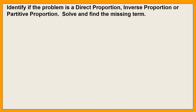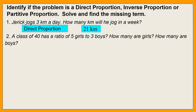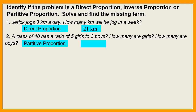Identify if the problem is a direct proportion, inverse proportion, or partitive proportion. Solve and find the missing term. Number 1: Jared jogs 3 kilometers a day. How many kilometers will he jog in a week? This is a direct proportion, and the answer is 21 kilometers. Next: a class of 40 has a ratio of 5 girls to 3 boys. How many are girls? How many are boys? This kind of proportion is partitive, and there are 25 girls and 15 boys.